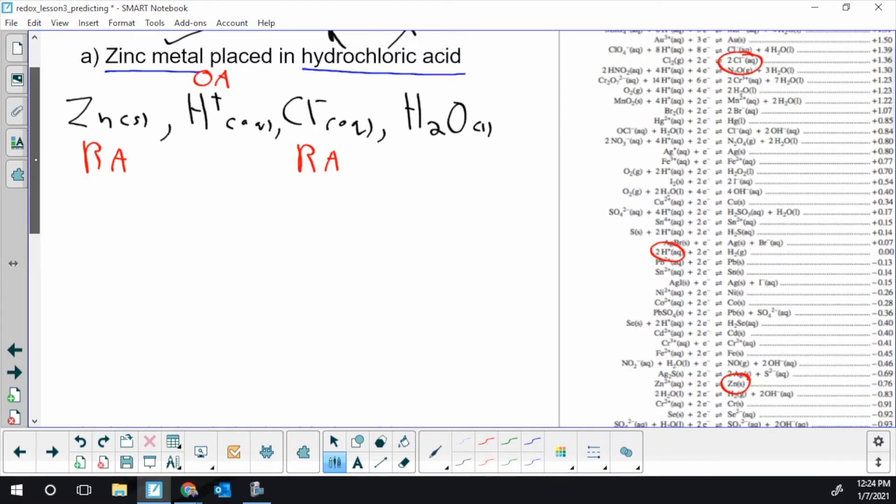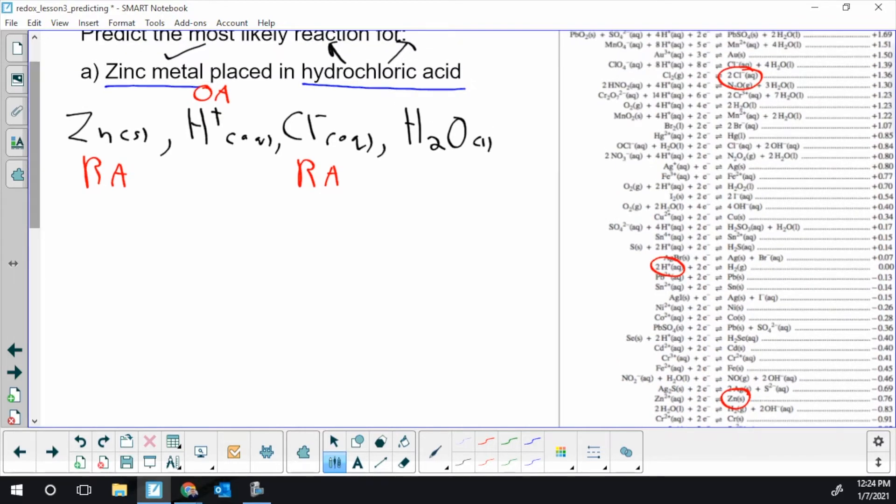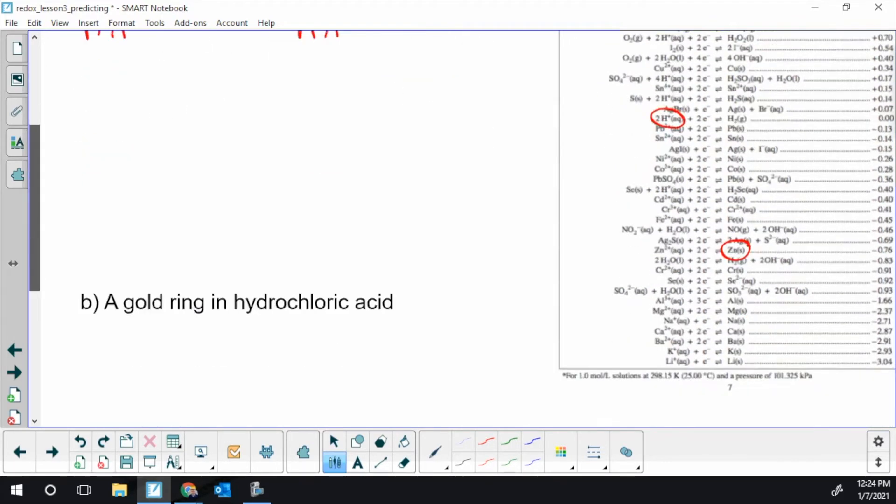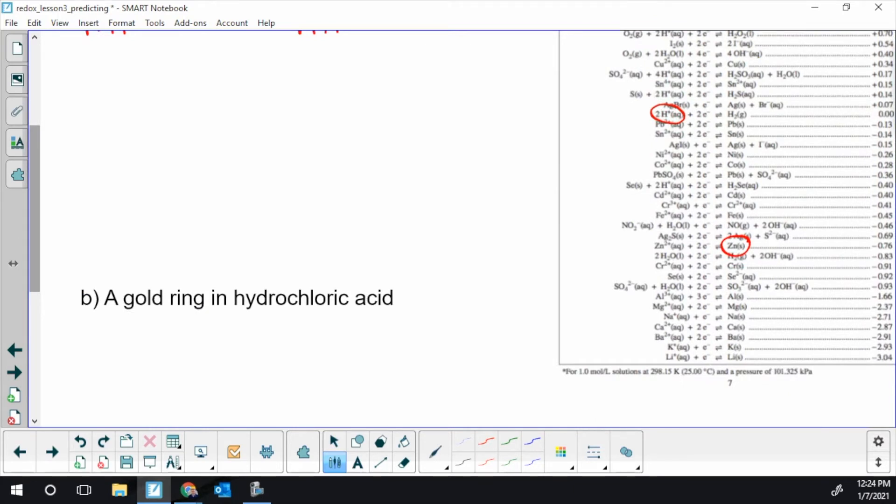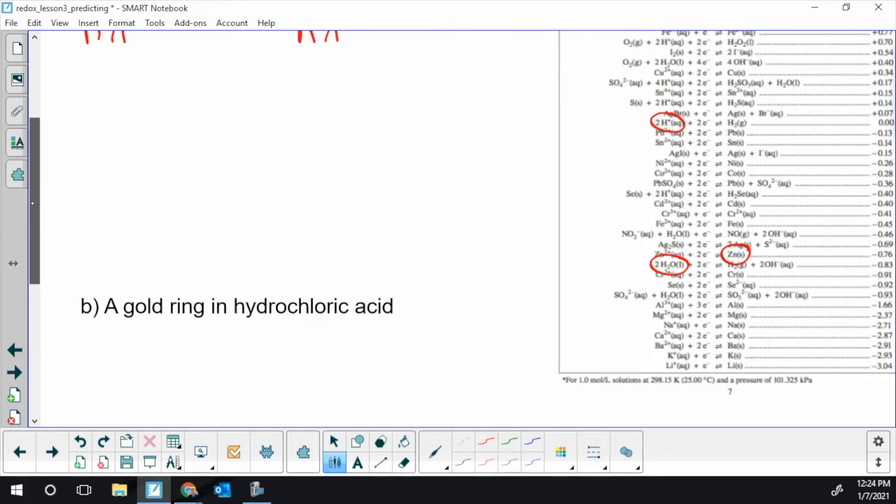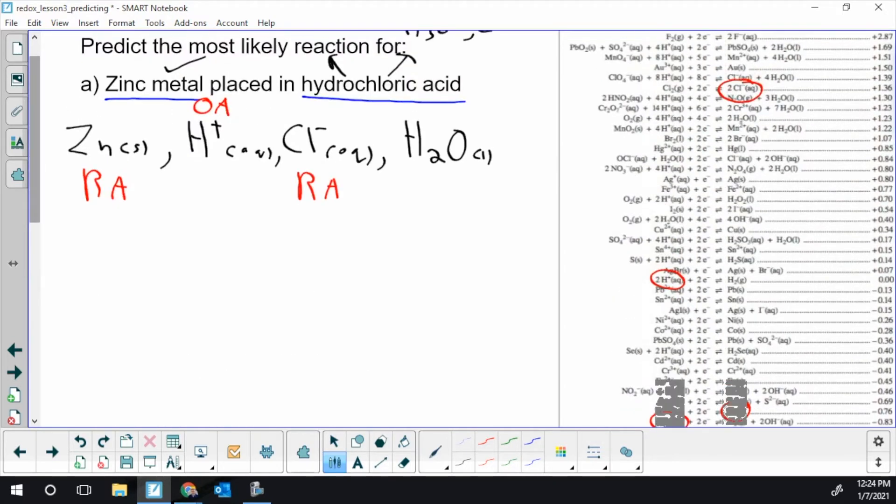Then we get to water. And water is one of those chemicals in the table on both sides. That can potentially disproportionate when the same thing reacts with itself. Now, it's not at the very bottom. There is water as an OA. And there is water as an RA.